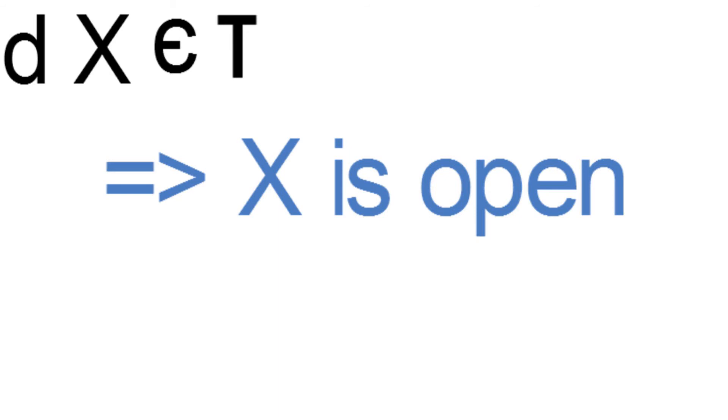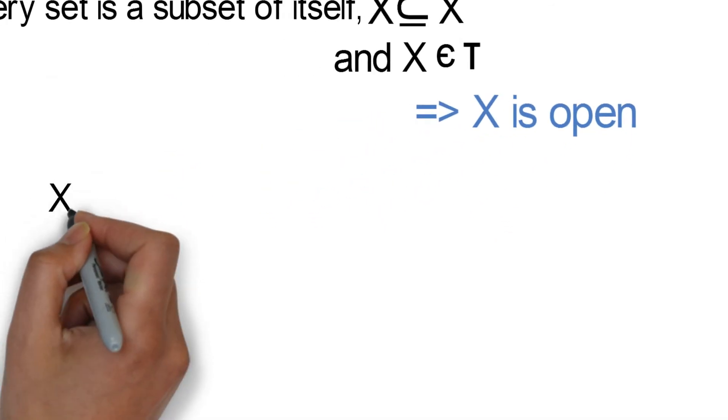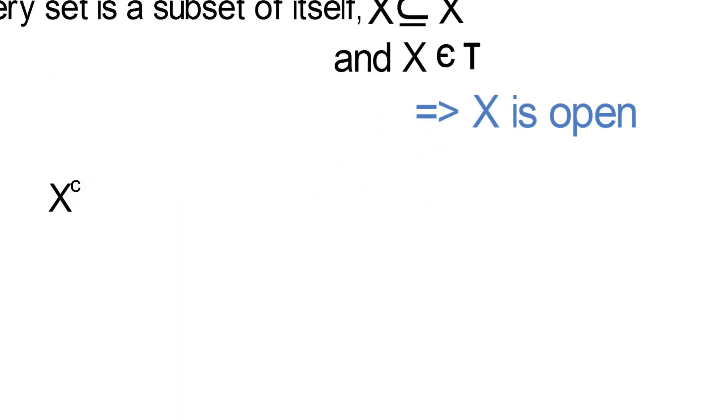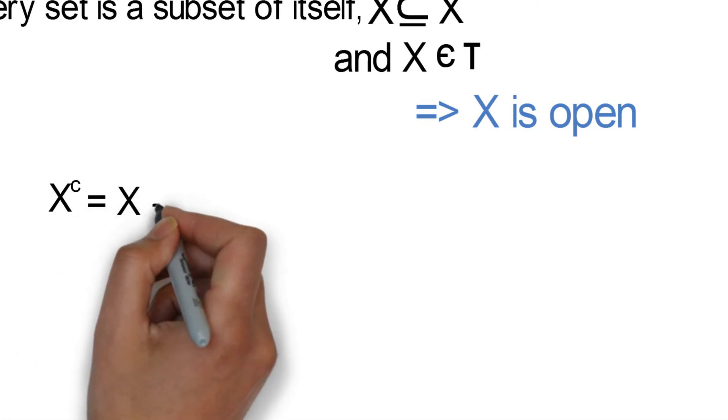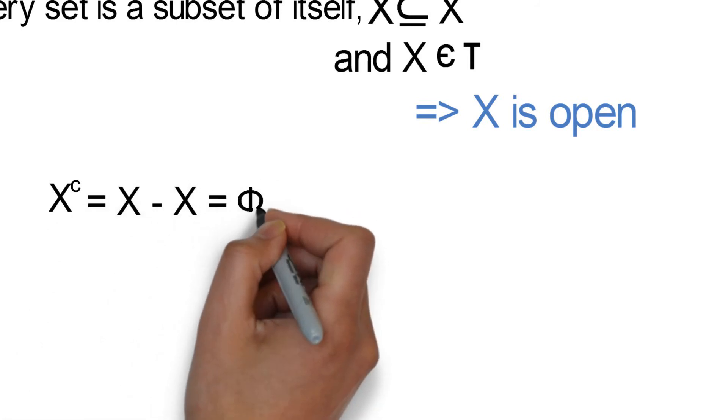Now we check if X is closed or not. We simply look for the complement of X. So X complement is equal to X minus X, which is equal to the empty set.